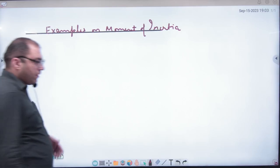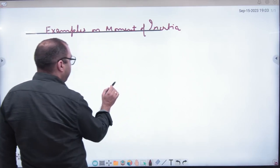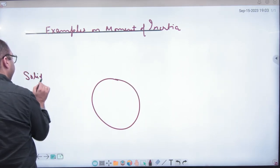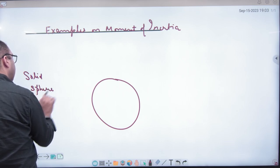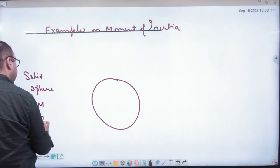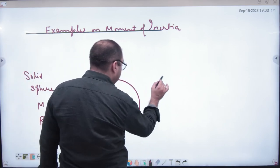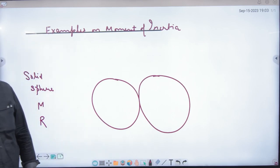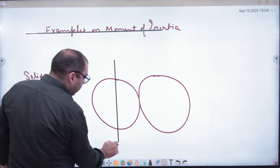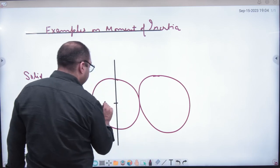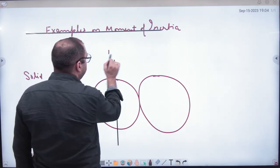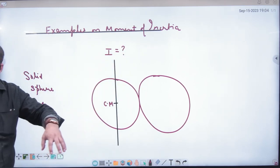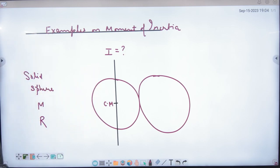First example: suppose that you have a solid sphere with mass m and radius r. With this sphere there is another solid sphere, also mass m and radius r. The question is: you have to find the moment of inertia of this system about this axis, which passes through the center of mass. What will be the moment of inertia about this axis?